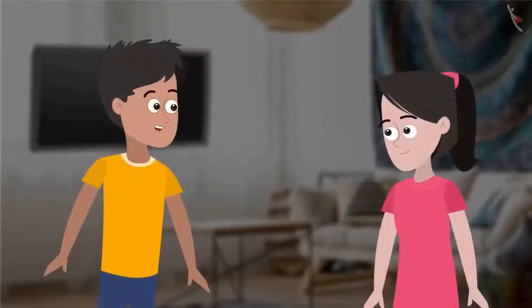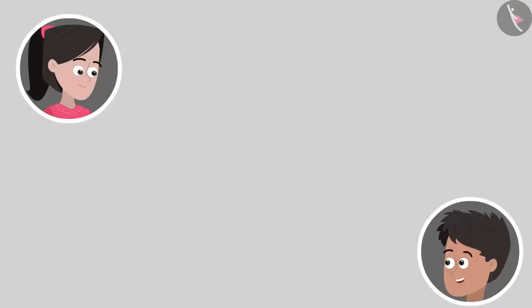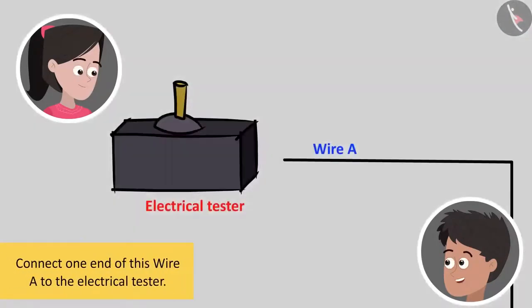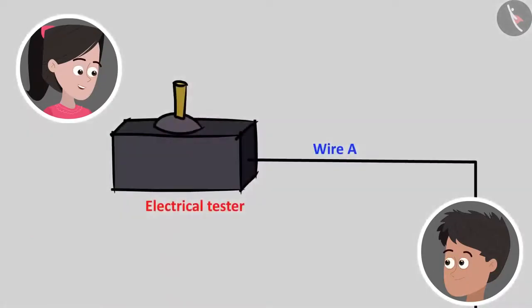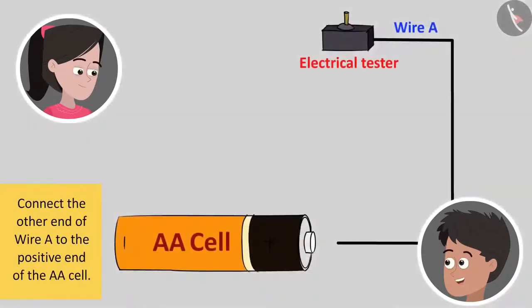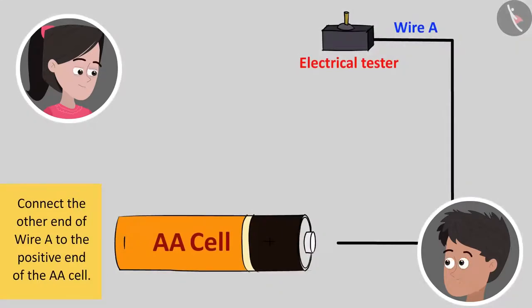Okay, now let us make a circuit. Will you help me with it? Yes, Bhaiya. Okay, so do as I say. First connect one end of this wire A to the electrical tester. Done. Now connect the other end of wire A to the positive end of the AA cell. Done that.